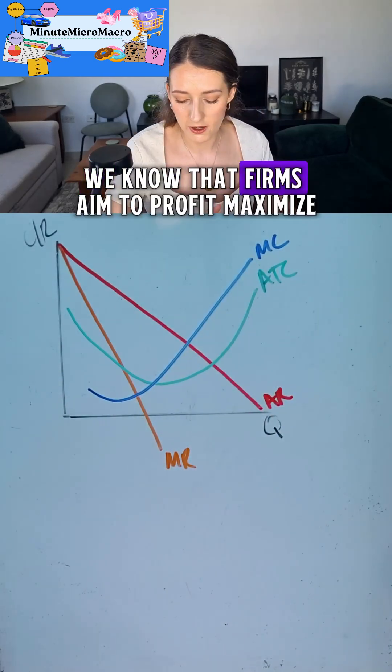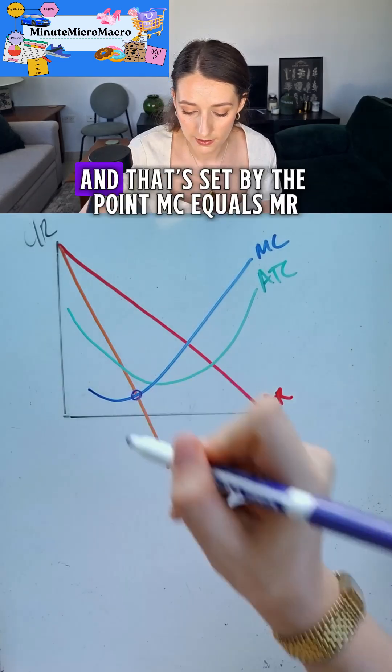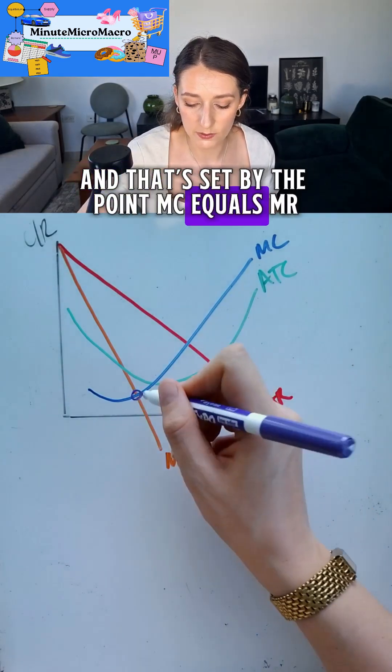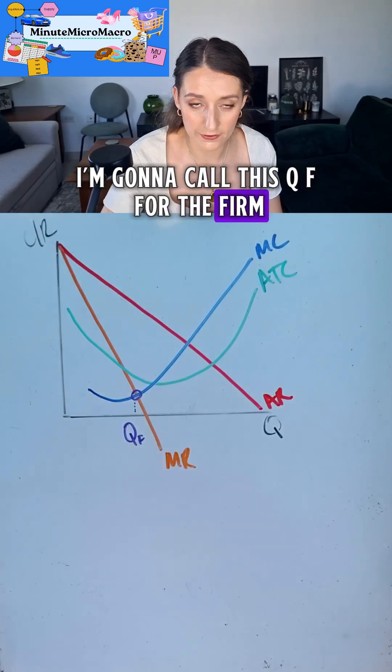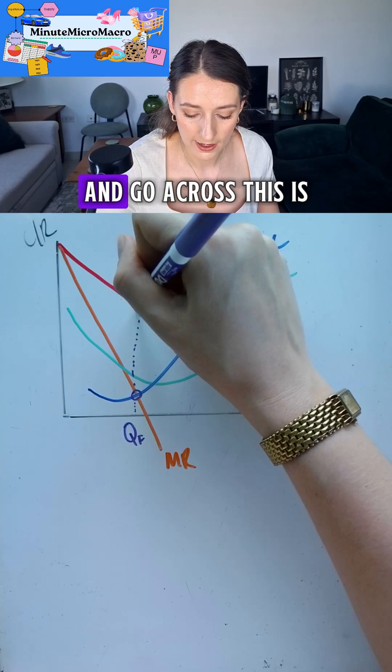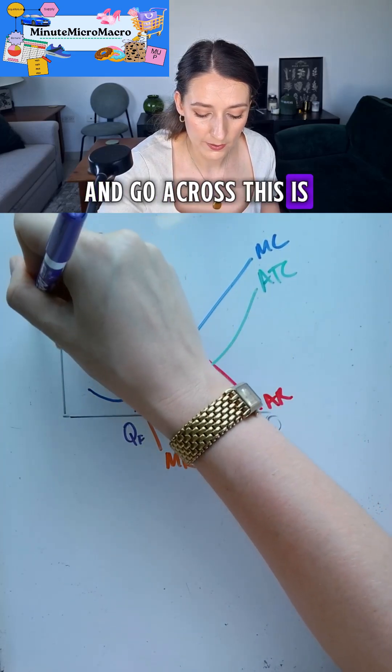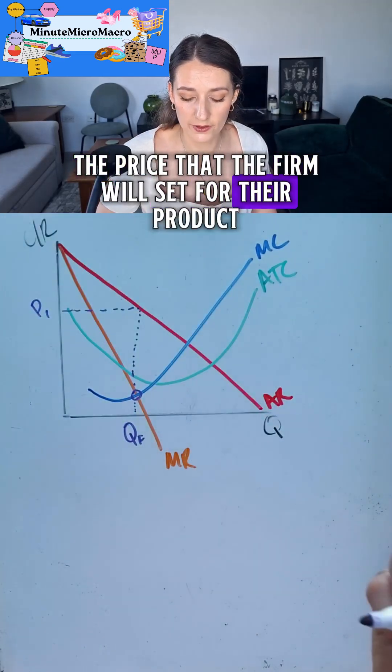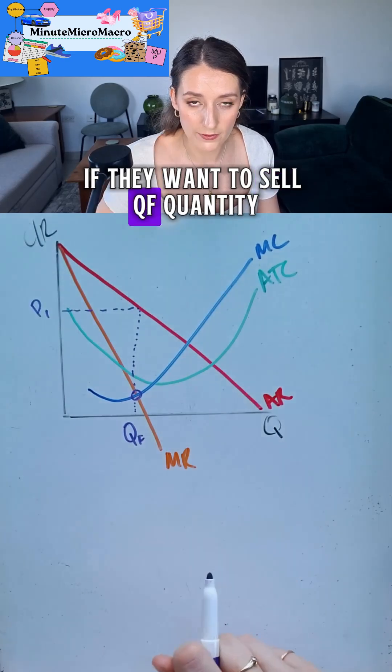We know that firms aim to profit maximize and that's set by the point MC equals MR. I'm going to call this QF for the firm. We go up from the quantity until we hit average revenue and go across. This is the price that the firm will set for their product if they want to sell QF quantity.